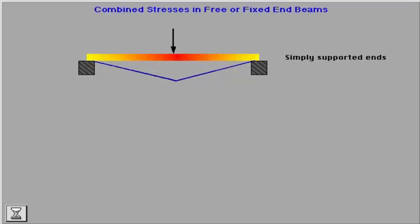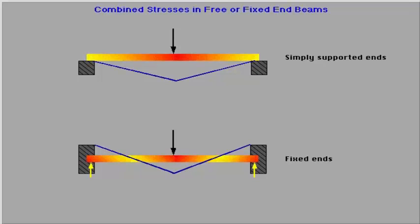For built-in beams, the effect of bending may be significant at the ends. However, here the outer layers of the beam will be stressed in tension on the load side and compression on the opposite side.